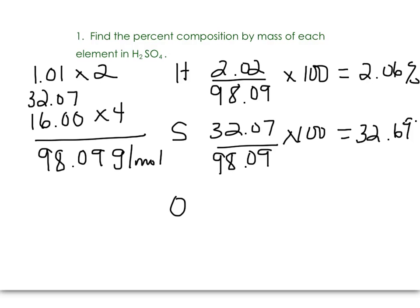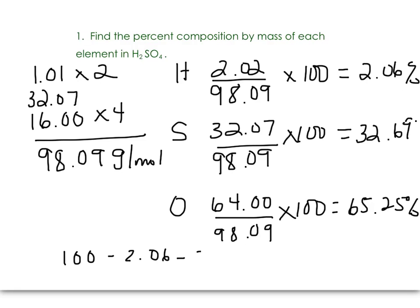And then finally, you can do the same thing for the oxygen. 16 times 4 is 64, divide by the total molar mass, and then times 100. That's 65.25%. When you're all done, these percents should add up to 100. And for the oxygen, if you didn't want to do the calculation this way, you could have taken 100% and then subtracted off the 2.06% and the 32.69% to give you the 65.25% for the oxygen. That would be another option.